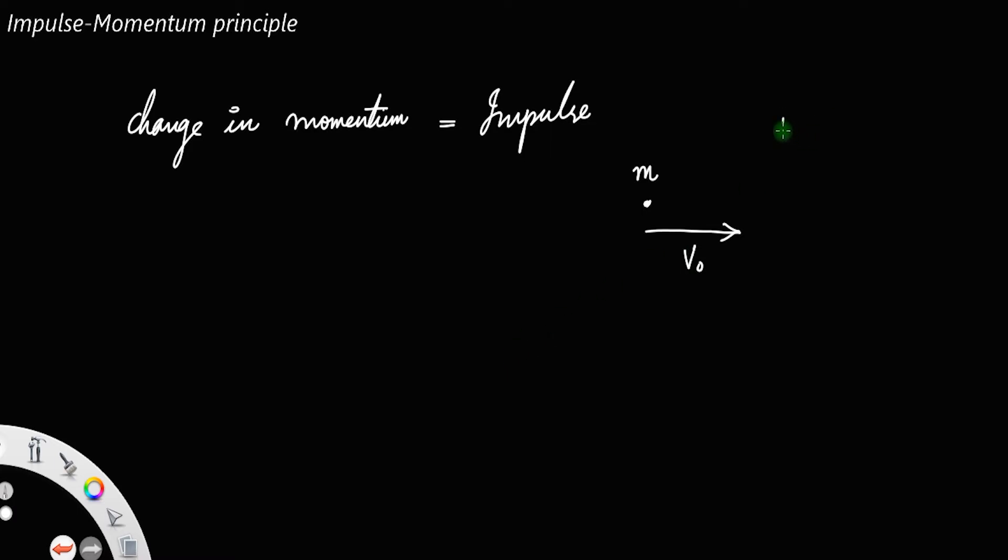Let after a time interval of t, its velocity became v. The mass m remains the same. The quantity mass times velocity will always be the momentum of the body.